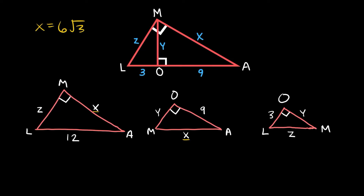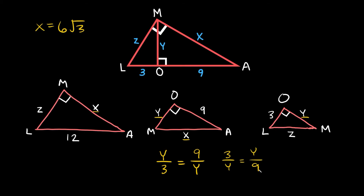Now let's solve for Y. There are only two triangles that have the term Y. We set up a proportion: Y over 3 equals 9 over Y, since Y is the short leg of one triangle corresponding to the short leg of 3, and 9 is the long leg corresponding to Y as the long leg. Note that if you wrote the proportions the other way, 3 over Y equals Y over 9, you still get the same answer.